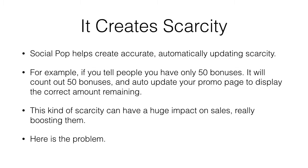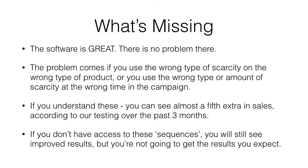Here's the problem: the software is great, that's not the issue. But if you use the wrong type of scarcity on the wrong type of product, or the wrong type or amount of scarcity at the wrong time or phase in the campaign, you're going to seriously damage your results. I know this from a lot of split testing in LeadPages and with Visual Website Optimizer. The good news is you don't have to do the hard work — you could see maybe 20-30% extra in sales.